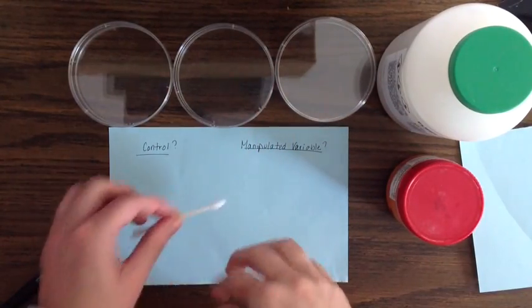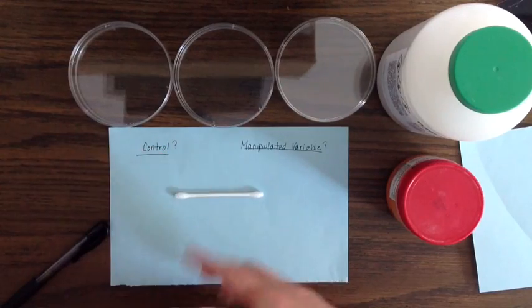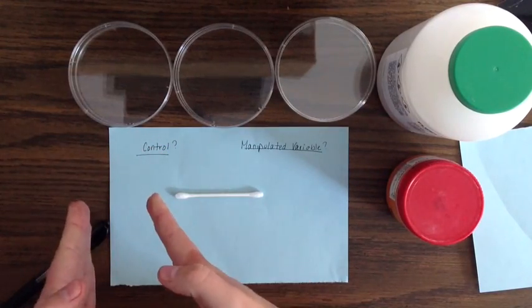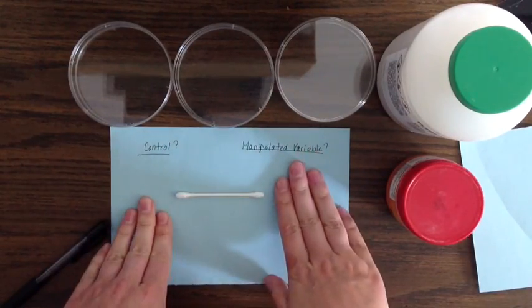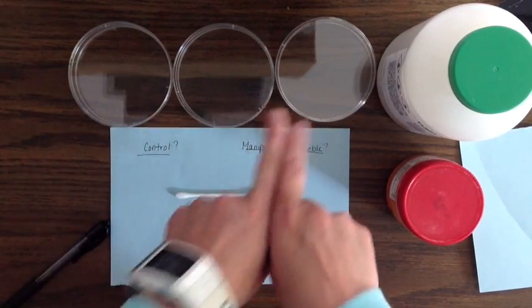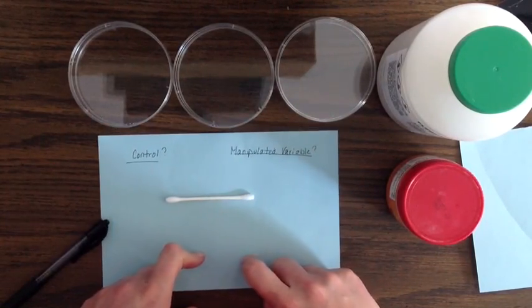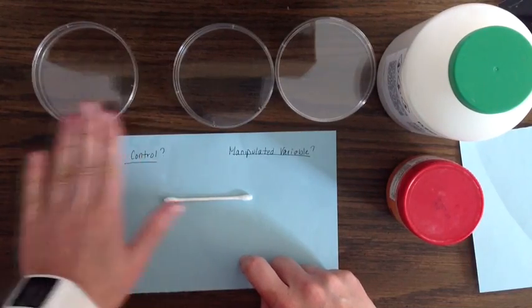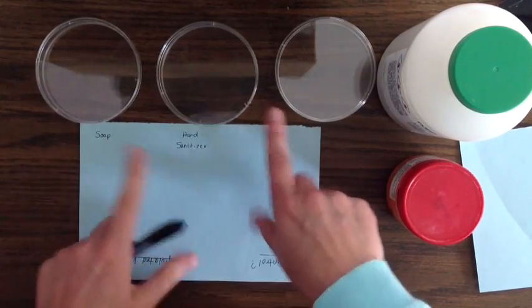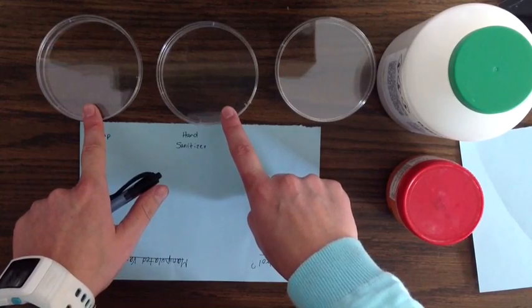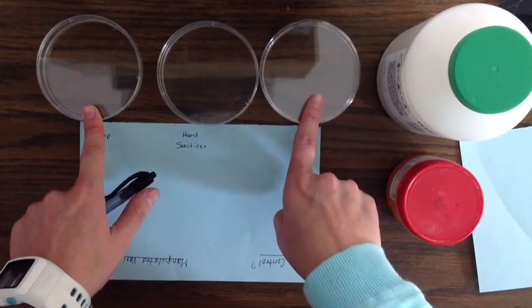Now if we're running our lab, again our bacteria lab, we need a control and then we need a manipulated variable. Now I have these three dishes, and let's say we're testing the difference between soap and hand sanitizer. So keep in mind these two petri dishes are filled with agar, and this one as well.